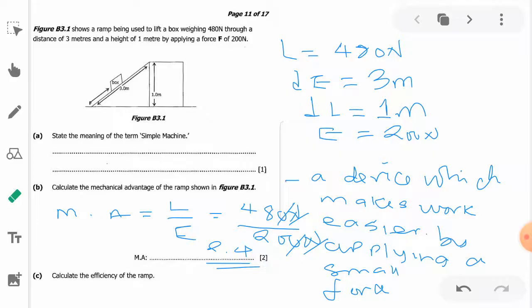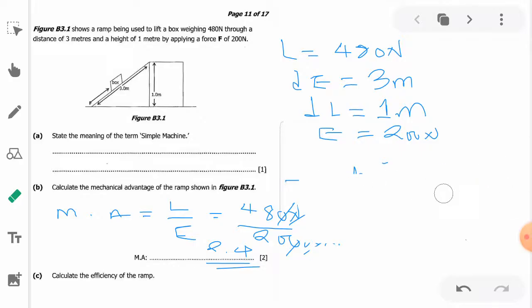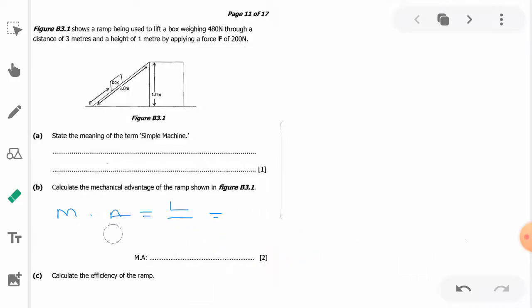Then question c says calculate the efficiency of the ramp. Keep in mind we have our mechanical advantage as 2.4. So let me just write it here again. We have MA as 2.4. Now we know that efficiency of the ramp is equal to mechanical advantage over velocity ratio times 100.